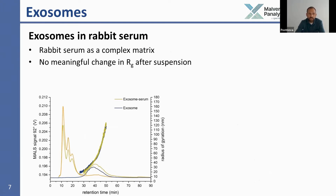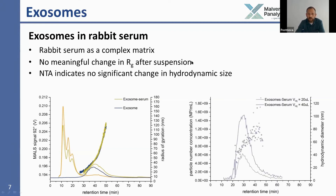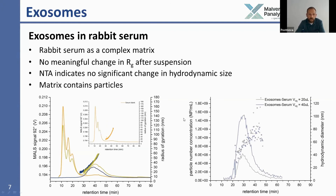To analyze these exosomes in a more complex environment, we spiked them into rabbit serum. We did not observe a significant change in the radius of gyration distribution compared to the native exosomes, and the NTA results also indicate no change in hydrodynamic size. Furthermore, we were able to characterize particles present in the matrix itself, which were in the same size range as our exosomes. Therefore, the particle number concentration determined by NTA shows a higher concentration than expected, because matrix particles add on top of the spiked exosomes.